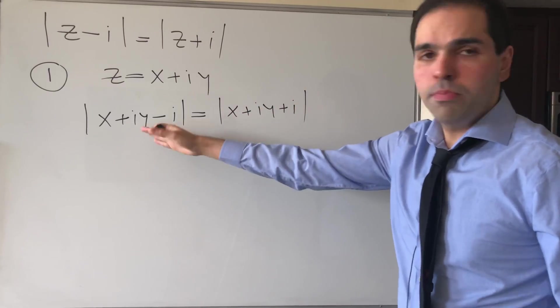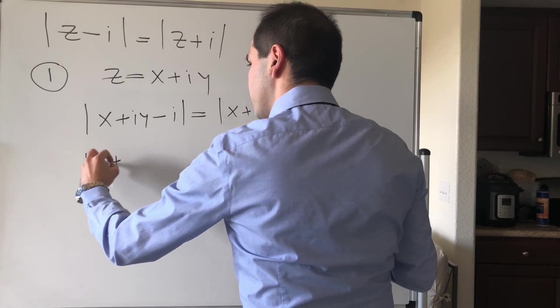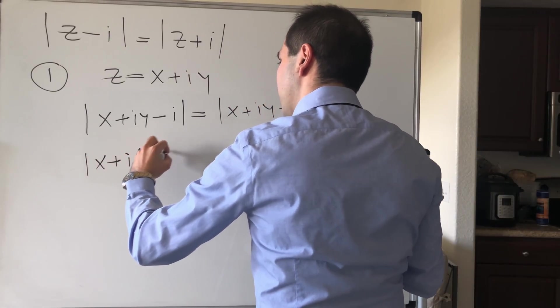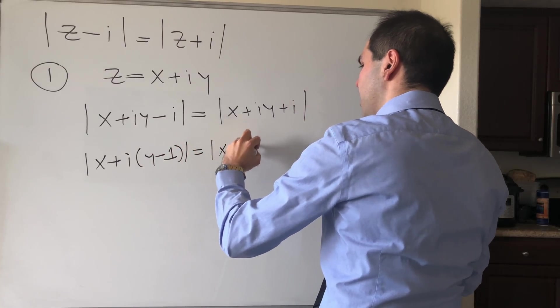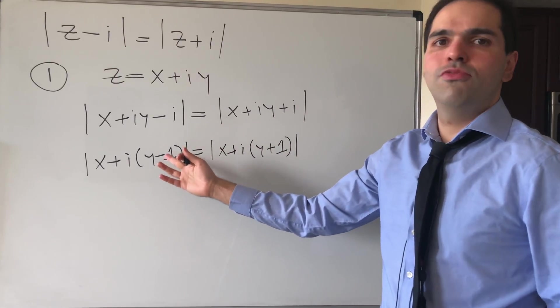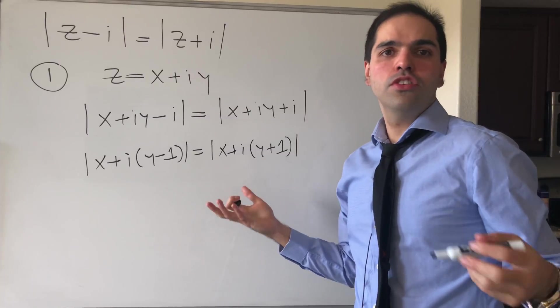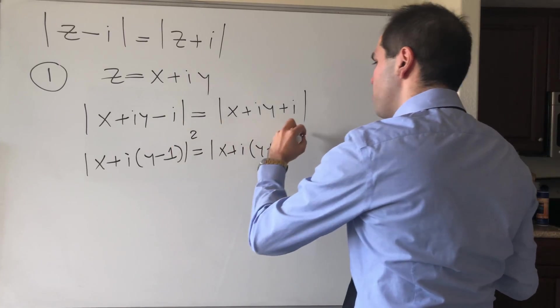And then, again, let's split this into real and imaginary parts. So this becomes x plus i times y minus 1 equals x plus i, y plus 1. Now, if you use the definition of modulus, it has a bunch of square roots. So to get rid of the square roots, let's just square both sides.